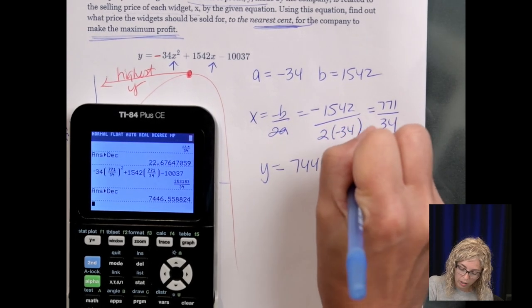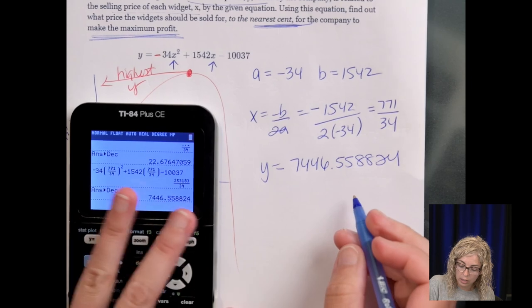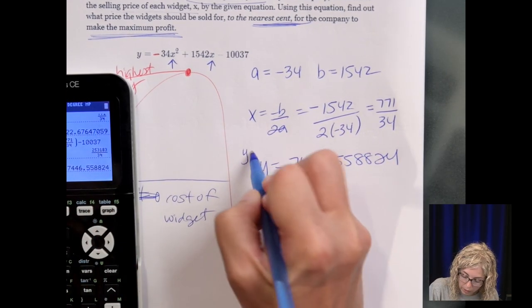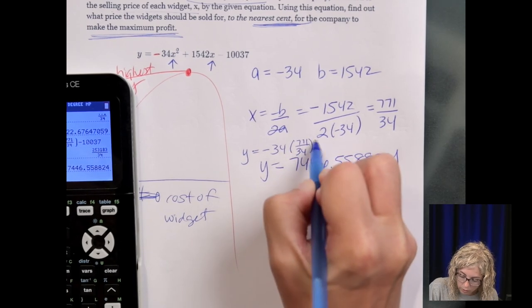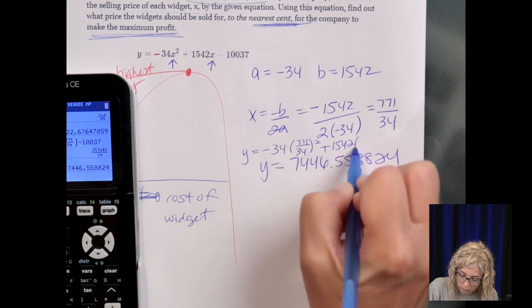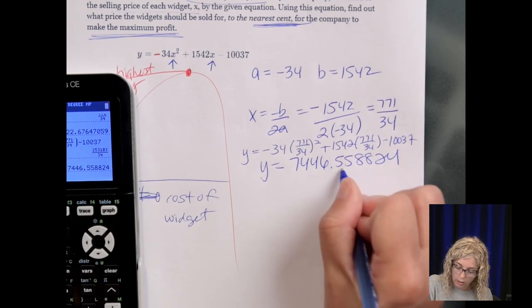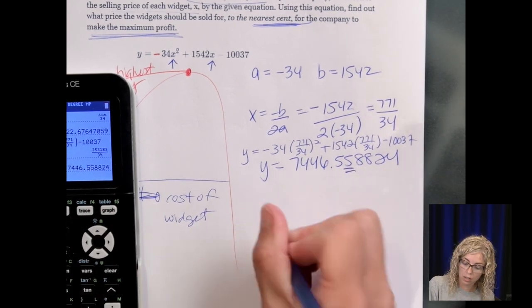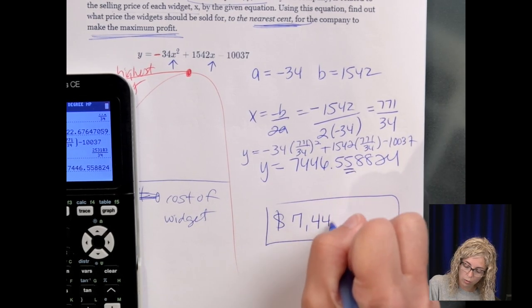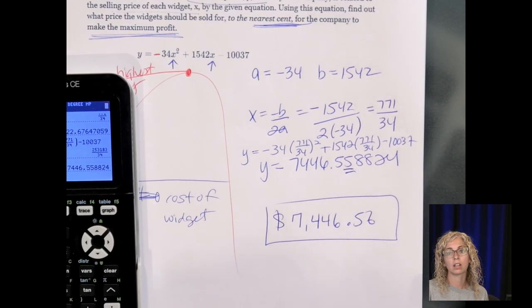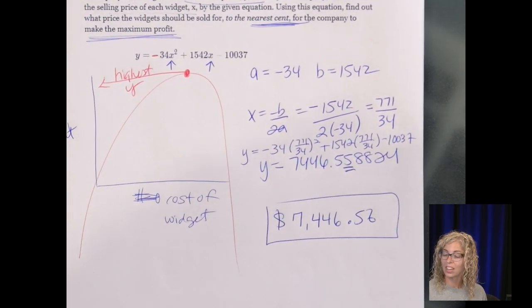Okay that's after we plug it in so we should make note here that y equals since I just did it on the calculator. It's the nearest cent, that's this decimal place right here. So we have for money $7,446 and 56 cents. And I believe that is it for today. Take care, have a good day.